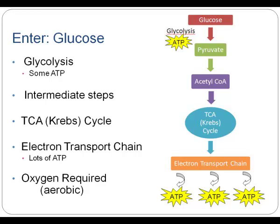The pyruvate is then converted to acetyl-CoA, which then goes on to move through the TCA, or Krebs cycle. From the Krebs cycle, we move on to the electron transport chain, and that's really where the vast majority of ATP is produced — where most of the energy comes from. Once we get down to acetyl-CoA, our body requires oxygen in order to move through the Krebs cycle and the electron transport chain. So this is an aerobic pathway, requiring adequate oxygen for glucose to move all the way through and produce that large amount of ATP.